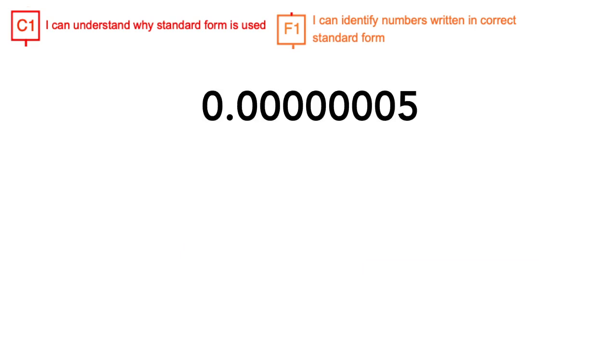Let's look at this number. This number in standard form is 5 times by 10 to the power of negative 8. Once again, like in the previous video, multiplying by 10 to the power of negative 8 is equivalent to the calculation of dividing by 100 million, which is equal to our original number.